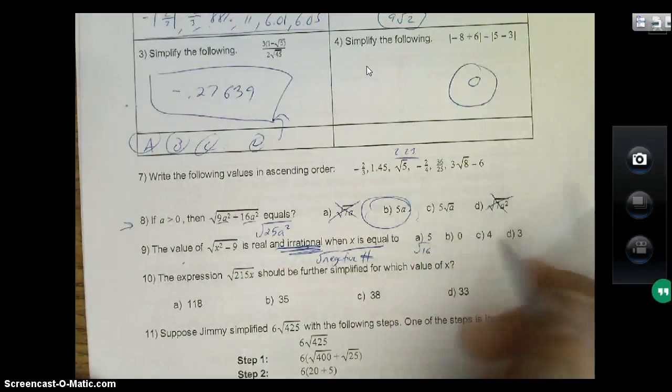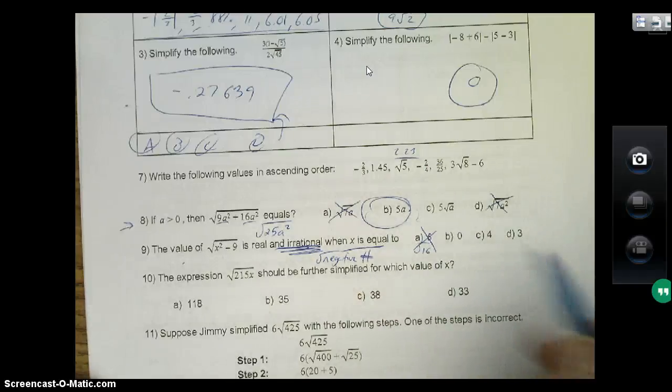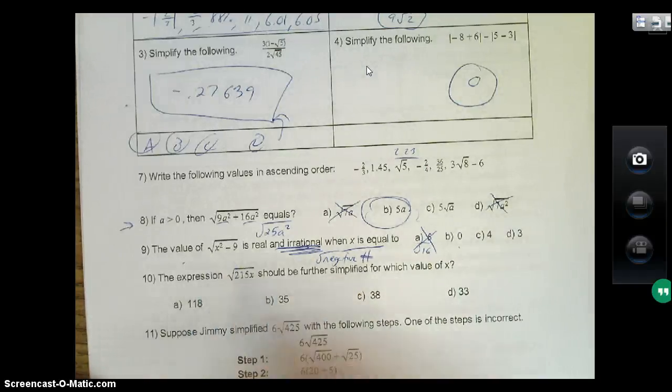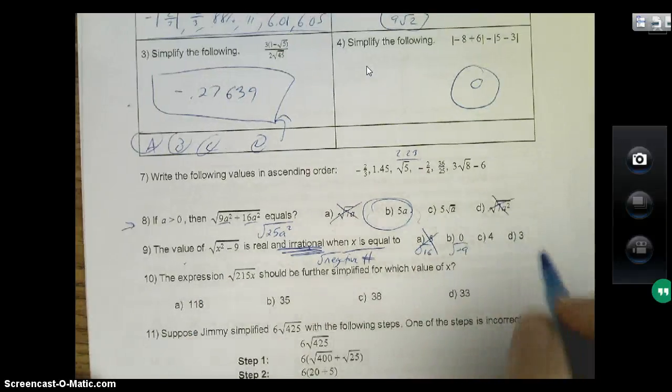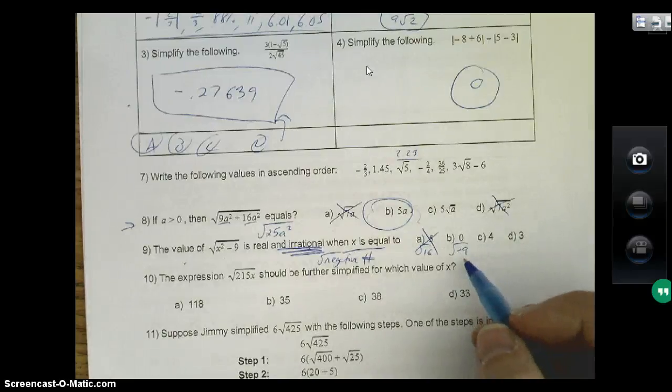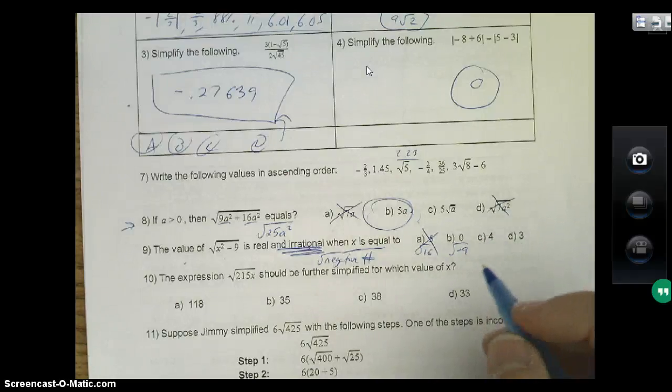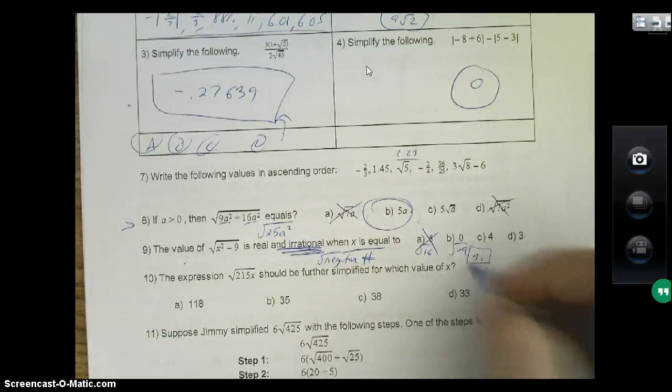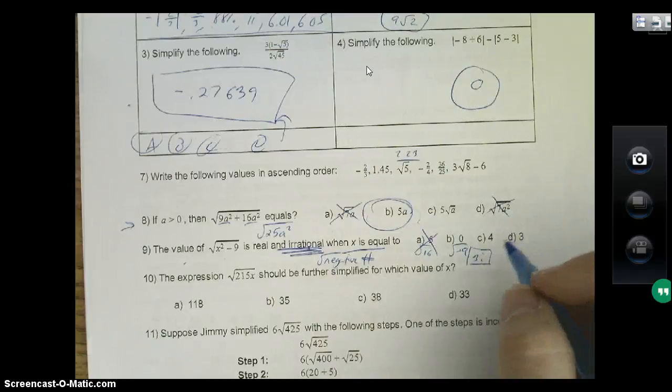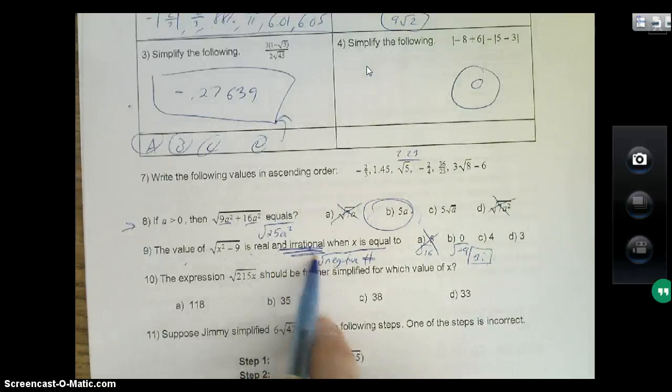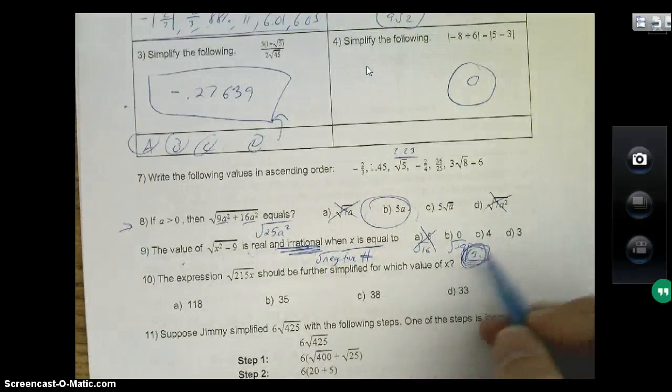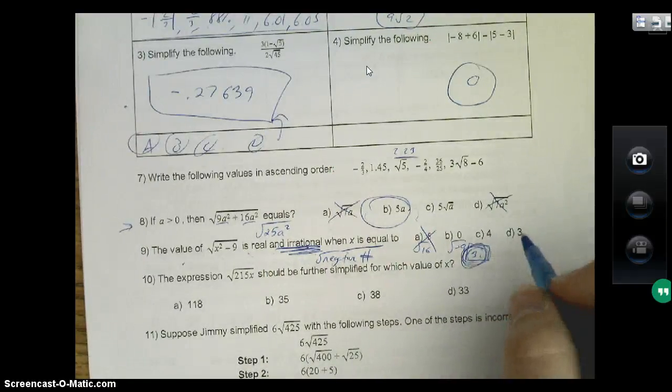Well I can't do anything with that. Square root of negative 9 is going to be 3i, which is imaginary. So actually I just reread this problem—it says real and irrational, so this gives you imaginary, so we don't want that one. Let's take a look at our next one: 4² minus 9, 16 minus 9 gives you square root of 7.